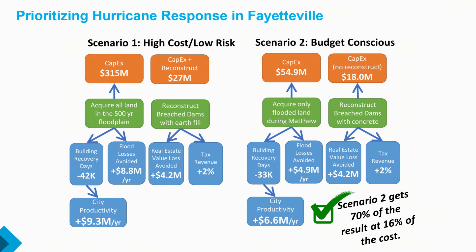They said they could never actually pay for that, so they looked at other options. What if instead of buying all property in the 500-year floodplain, they just buy the properties that flooded during Matthew? That dropped the number down to $55 million. And for dams, let's reconstruct them with concrete so they won't breach again. The net result is that scenario two gets 70 percent of the result of scenario one, but at 16 percent of the cost. That's valuable, actionable information that Fayetteville and the North Carolina Emergency Management Department can take to FEMA to make a case for new funding.